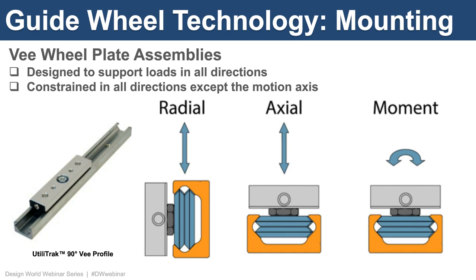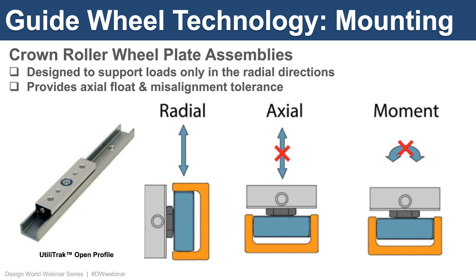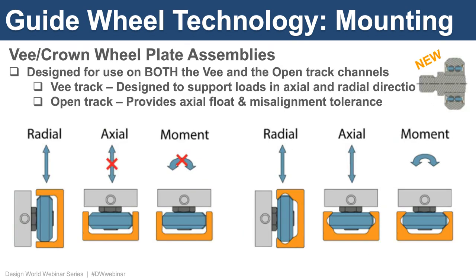An ideal installation configuration uses one V guide and one open guide connected across a span to eliminate binding due to misalignment in the mounting structure. The V wheel plate is designed to support loads in all directions — radial, axial, and moment loads for twisting torques — and is constrained in all directions except for the axis of motion. The open track profile used with crown rollers supports loads only in the radial direction. The curved wheel is able to float shallower or deeper in the track channel and can rotate for axial misalignment capabilities.